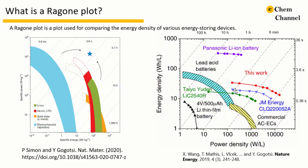We can also compare the performance of our work with commercialized devices. However, such comparison may not be fair because what we have calculated is the energy density and power density based on the active material. But the commercialized device includes package, binder, current collector, electrolytes, and separator. So the commercialized device shows much lower energy density compared to the energy density of the active material. One close approach is to multiply a factor of 0.2 or 0.3 to the value of the energy and power density of the active material to compensate the mass of the inner material of the electrodes.